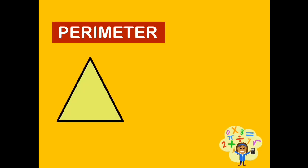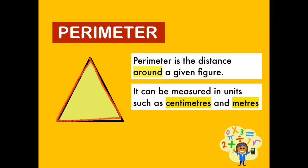Try to draw a triangle on a piece of paper and trace the lines around it using your finger. The one that you are tracing is the perimeter of the triangle. Perimeter is the distance around the given figure. It can be measured in units such as centimeters or meters.